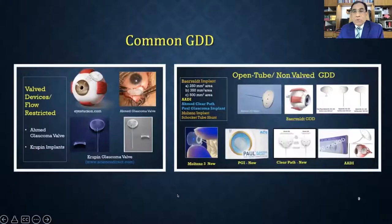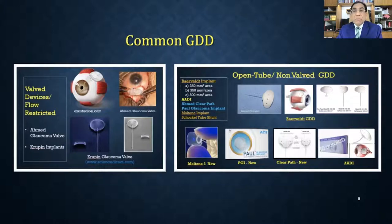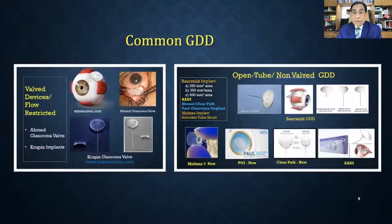There are different types of glaucoma drainage devices. Some are valved, some are non-valved or open tube. The most commonly used valved device worldwide is the Ahmed Glaucoma Valve — a flow-restricted valve — and the Cupid implant is also valved. Non-valved devices include the Baerveldt implant (250 and 350 mm²), the AADI (Aurolab Aqueous Drainage Implant), the Paul Glaucoma Implant from Singapore, and the Molteno implant.